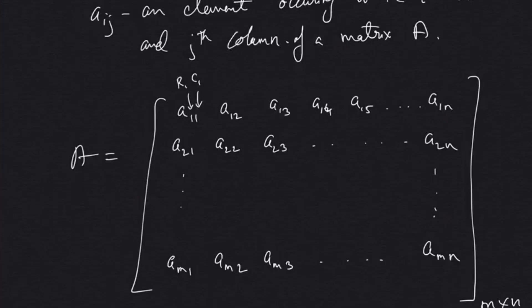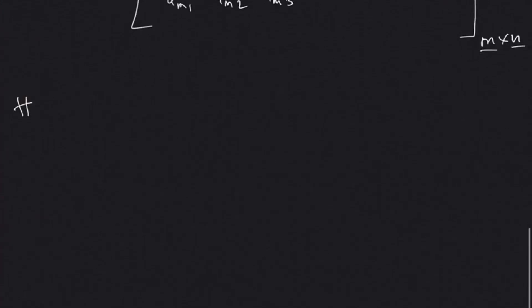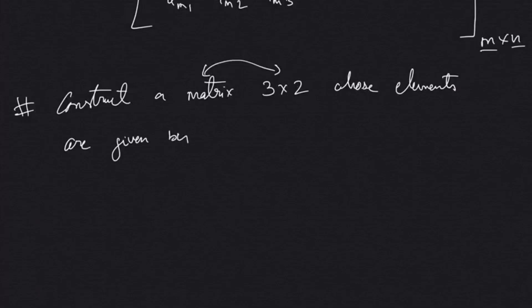Let's solve a simple question on construction of a matrix. The question is: construct a 3 by 2 matrix whose elements are given by aij = i + 2j.